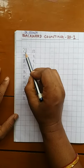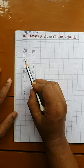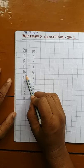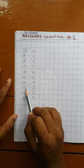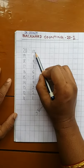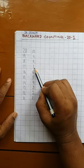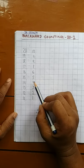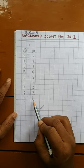Chaliye aur ek baar padhte hain. 20, 19, 18, 17, 16, 15, 14, 13, 12, 11, 10, 9, 8, 7, 6, 5, 4, 3, 2, 1.